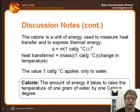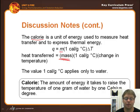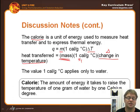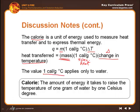One unit used for energy is the calorie, used to measure the amount of heat transferred and to express thermal energy. It depends on three characteristics: the mass (m), the change in temperature (delta T — delta means change), and the specific heat capacity. For water, the specific heat capacity is one calorie per gram degree Celsius.